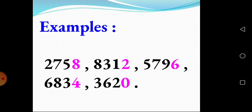Look at the numbers: 2,758, 8,312, 5,796, 6,834, and 3,620. Children, see the one's place. The numbers are 8, 2, 6, 4, 0. So, these numbers are called Even Numbers.